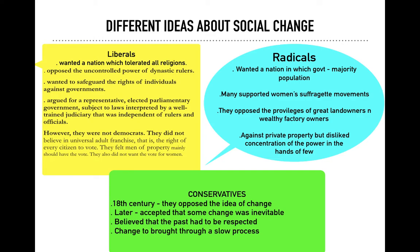Liberals wanted a parliamentary kind of government where representatives are chosen by the people. They also wanted a judiciary that is well-trained and free from the control of rulers and officials — the judiciary should be independent. However, liberals cannot be called democrats. Although they wanted a parliamentary and representative government, they did not believe in universal adult franchise — the right to vote for every citizen.